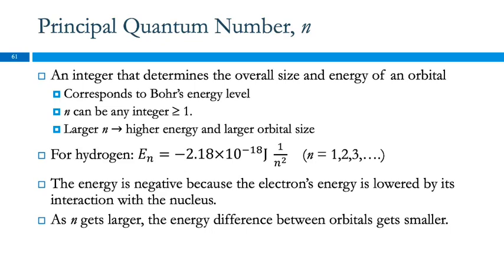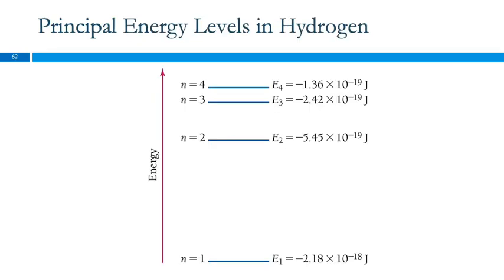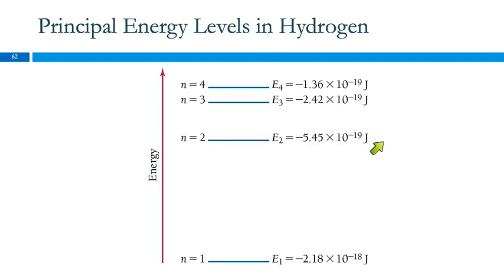The energy is negative because the electron's energy is lowered by interacting with the nucleus. As n gets larger, the energy difference between the orbitals gets smaller. So in an energy diagram with energy going up: at n equals 1, the energy is minus 2.18 times 10 to the minus 18th joules; at n equals 2, it's minus 5.45 times 10 to the minus 19th joules — less negative, so energy is getting larger, getting closer to zero.